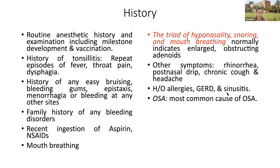In history, we assess routine anesthetic history and examination for a pediatric patient — developmental milestones appropriate for age, vaccination status, history of repeated tonsillitis episodes with fever, throat pain or dysphagia. Then history of easy bruisability, bleeding gums, epistaxis, family history of bleeding disorders, recent ingestion of aspirin or NSAIDs. Mouth breathing must be excluded. A triad of hyponasality, snoring, and mouth breathing indicates enlarged obstructing tonsils or adenoids. Other symptoms include rhinorrhea, post-nasal drip, chronic headache, chronic cough, allergies, GERD, and sinusitis.